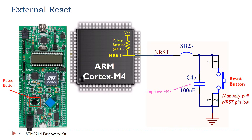The NRST pin is pulled up internally within the processor chip. If the reset button is pressed down, the NRST pin is pulled low. When the reset button is released, the NRST pin becomes high again. A pull-down capacitor is added in parallel with the reset button.